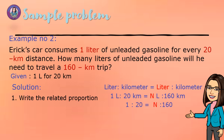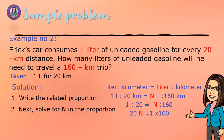That is 1 to 20 equals N to 160. Next, solve for N in the proportion. That becomes 20N equal to 1 times 160. After finding the product, we divide by 20. So 160 divided by 20 equals 8. The value of N is 8. Therefore, 8 liters are needed for a 160 km trip.